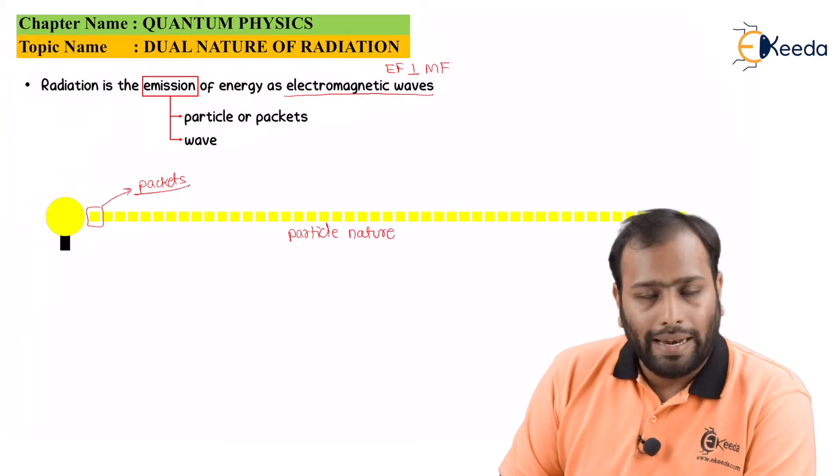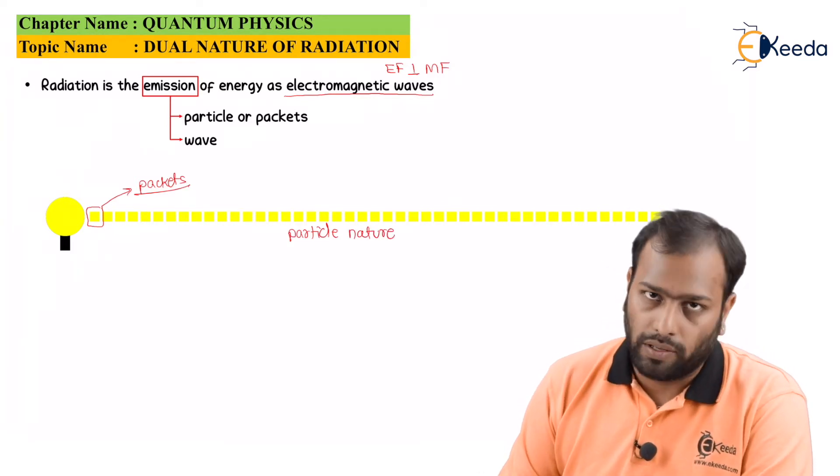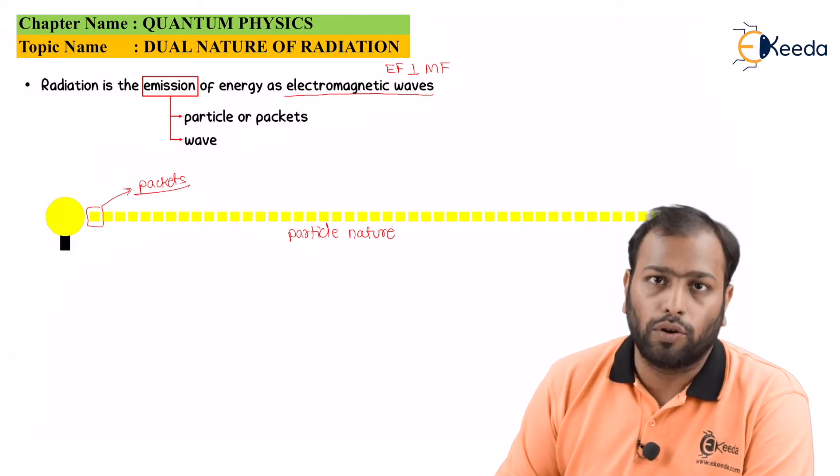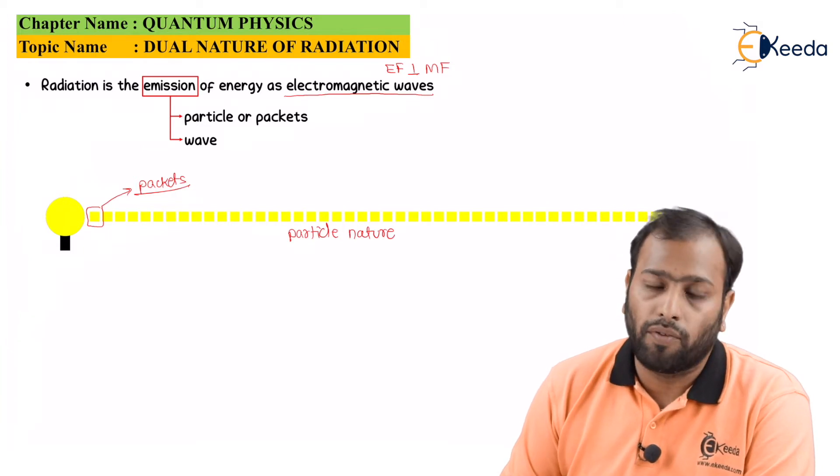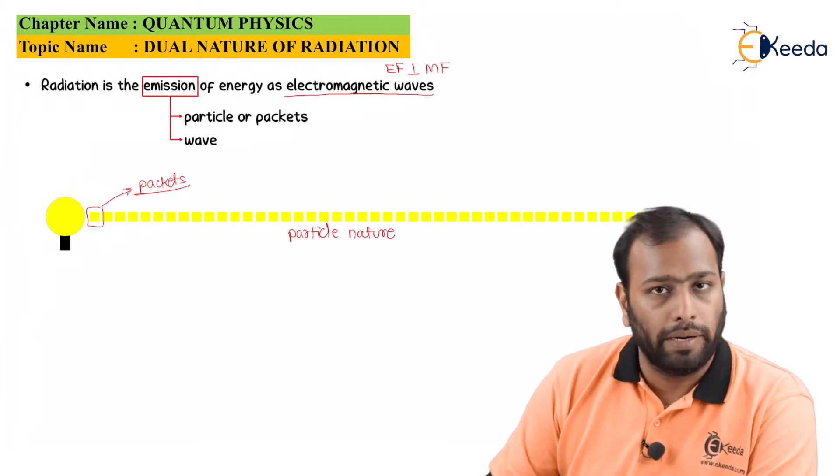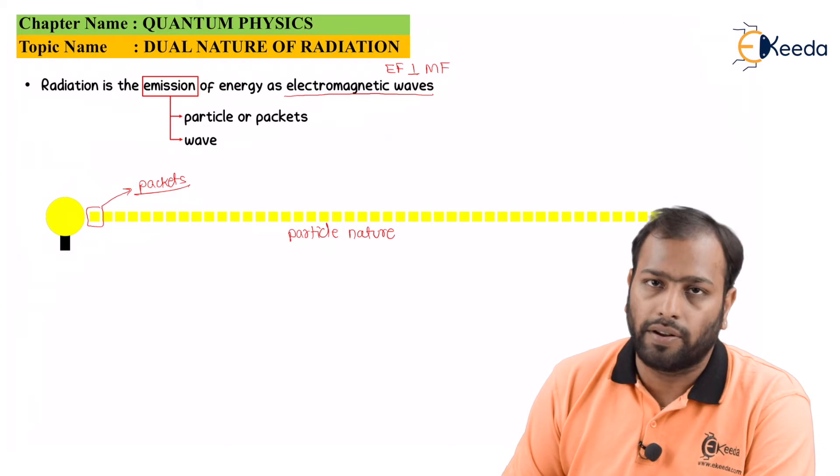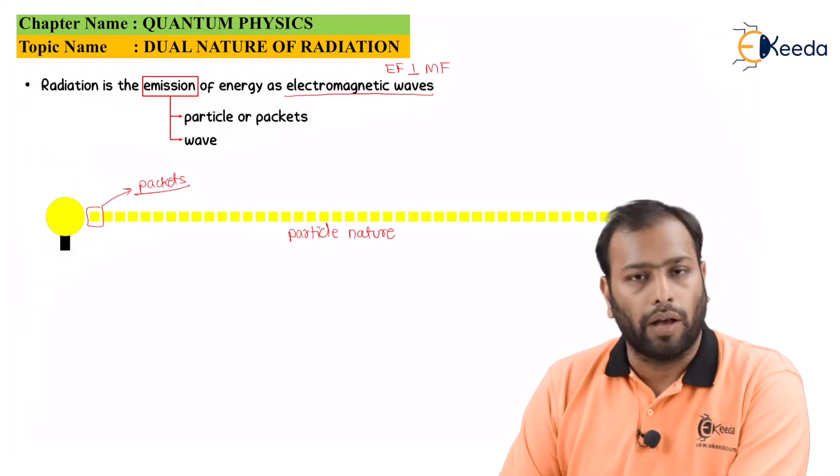Now, why light? Because light is, of course, one of the radiations. Is it applicable only for light? Of course, another viva question: no, it is not only applicable for light. It is applicable for all the electromagnetic spectrum, be it infrared, ultraviolet, or even the X-rays and UV rays.